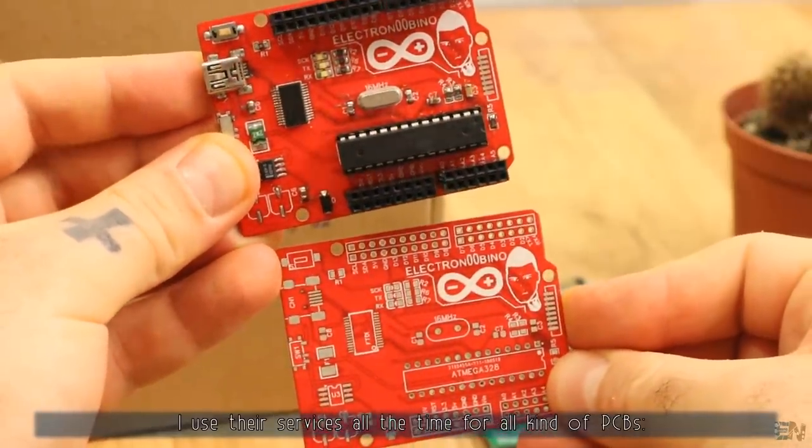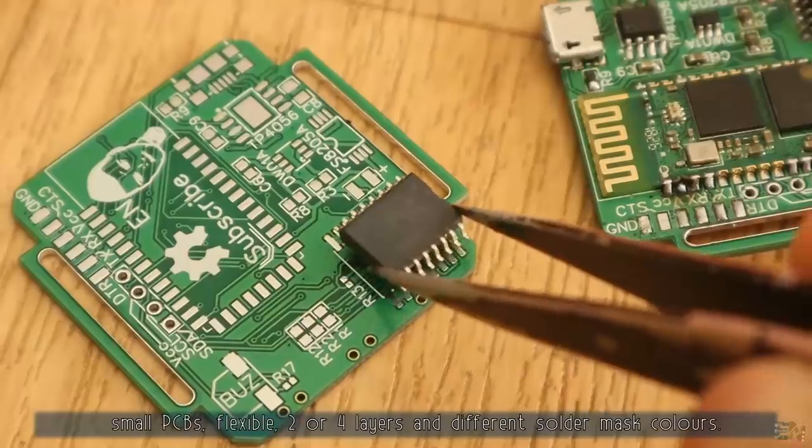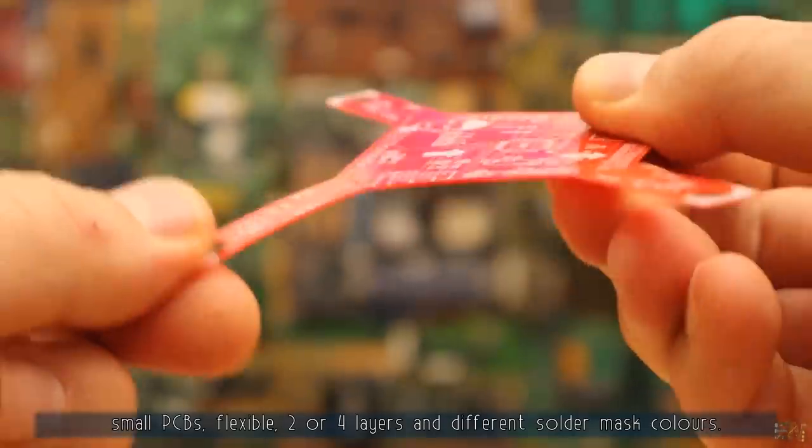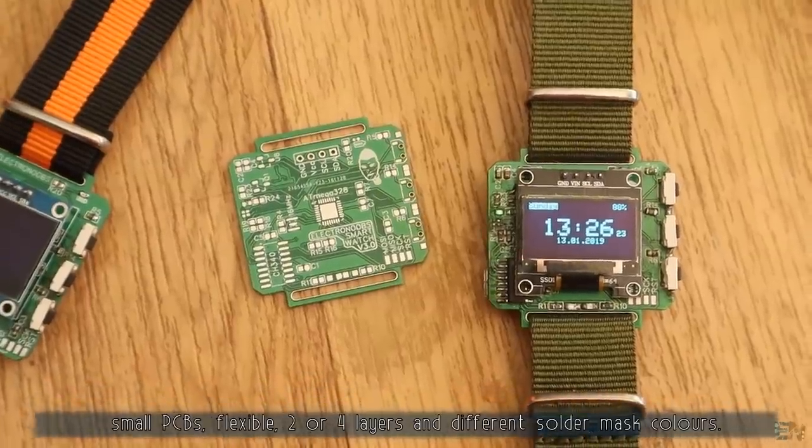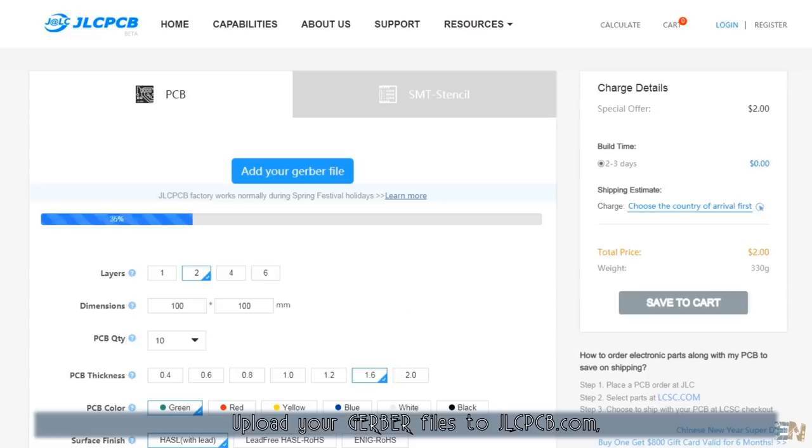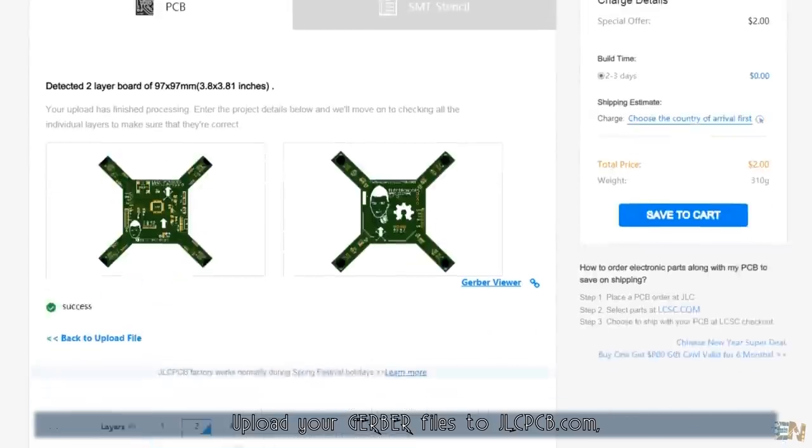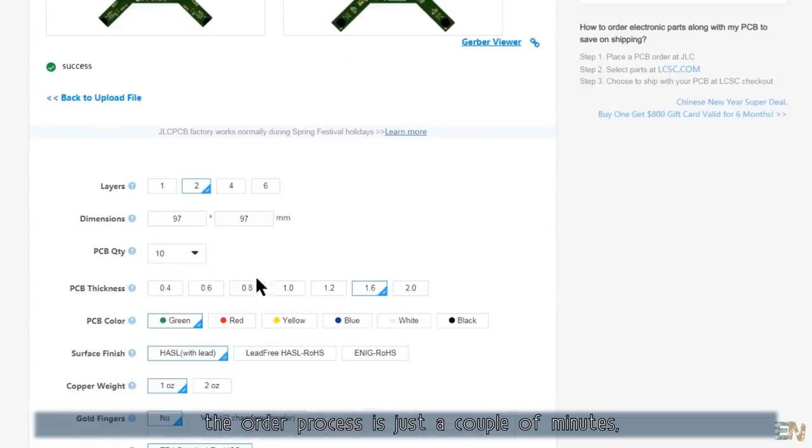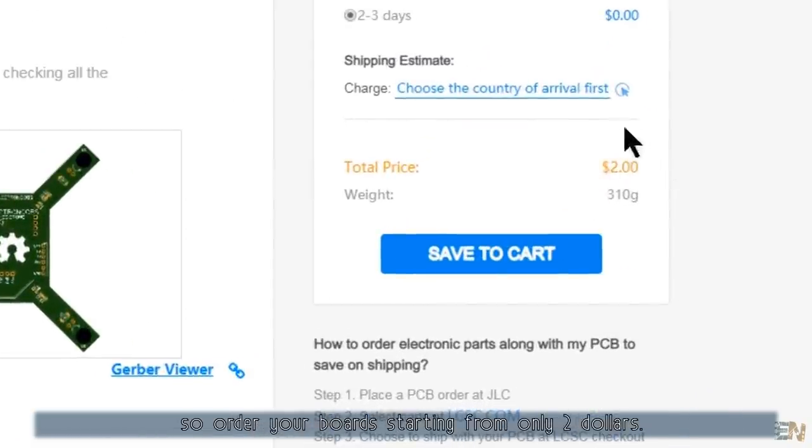I use their services all the time for all kinds of PCBs - small PCBs, flexible, two or four layers, and different solder mask colors. Upload your Gerber files to JLCPCB.com. The order process is just a couple of minutes, so go and order your board starting from only two dollars.